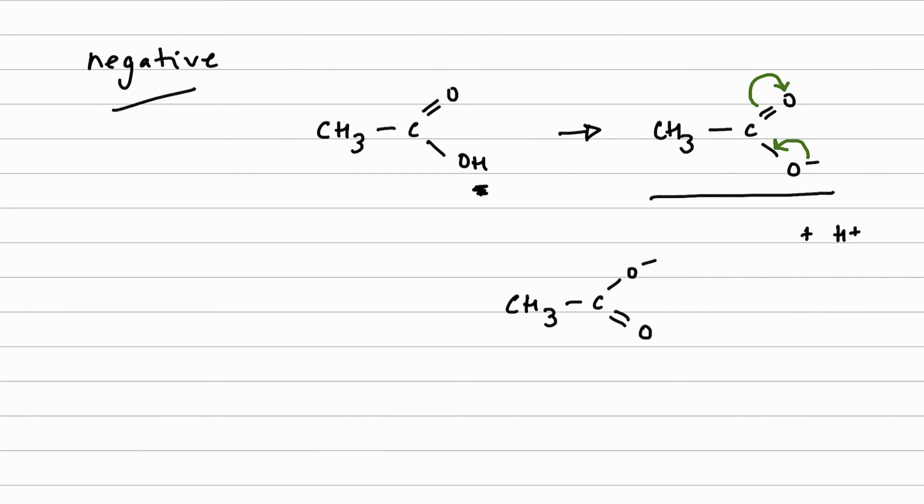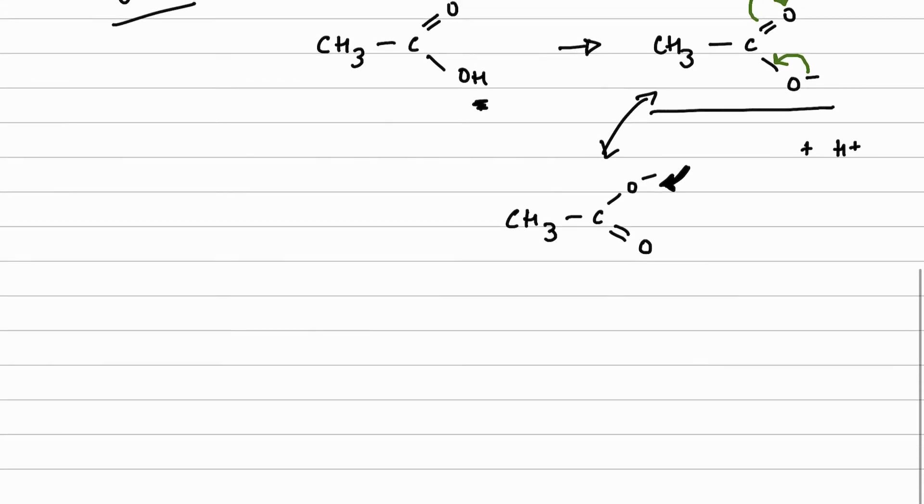So this is a negative mesomeric effect, and this oxygen here, I'll get my arrow in the right place, is accepting electrons from the pi bond. Once again, we're not saying that our two ions are interchanging, but we can draw a resonance hybrid form again to show the kind of electron structure of this stabilized ion.